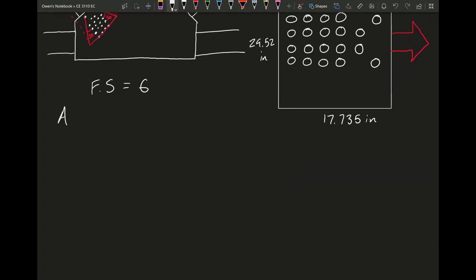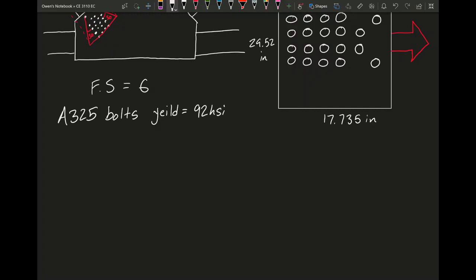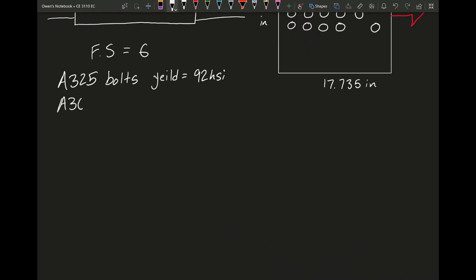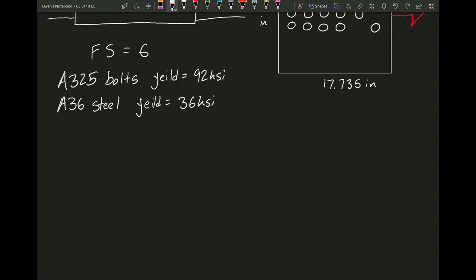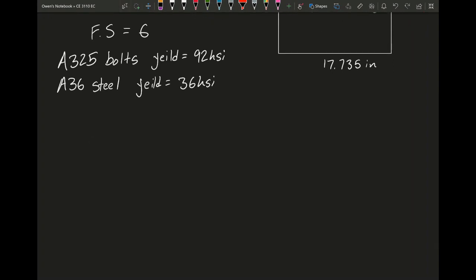There's a few things we should get out of the way before we start our calculations. Bridges usually have a safety factor of about six. So that means all the materials are designed to handle about six times the amount of force that should normally be applied to them. We know the type of steel for the bolts and for the gusset plate. The bolts are using A325 bolts and their yield is equal to 92 KSI. We also have A36 steel for the gusset plate and that yield is equal to 36 KSI.